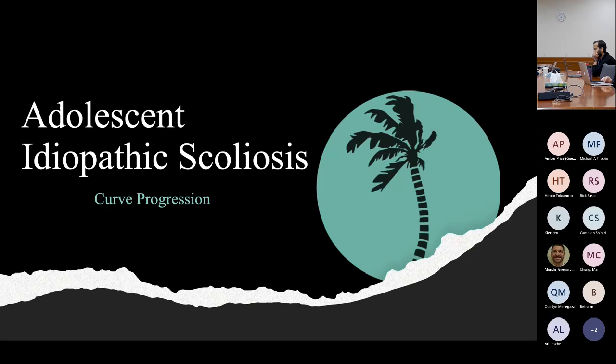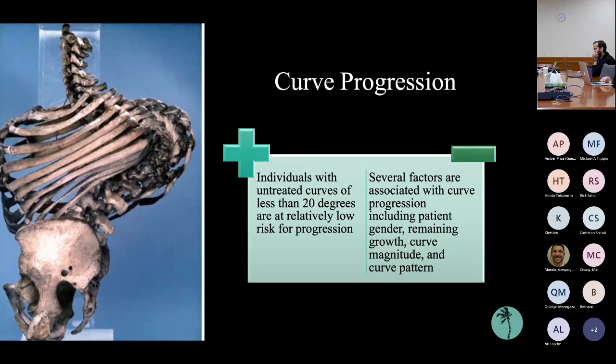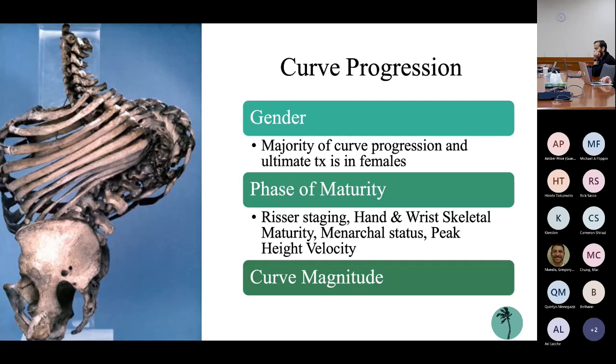If you see a patient in clinic, it's important to know the potential for curve progression. In general, patients with untreated curves less than 20 degrees are at relatively low risk for progression, but multiple factors — including gender, remaining growth, and curve magnitude — all contribute to potential curve progression.